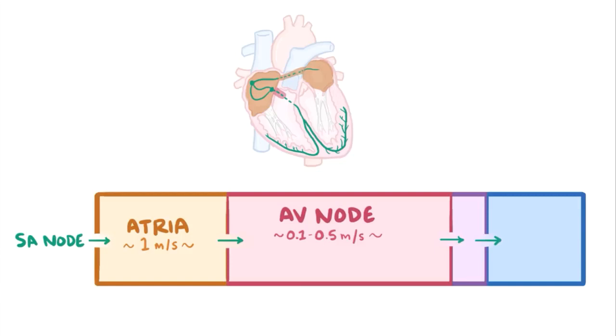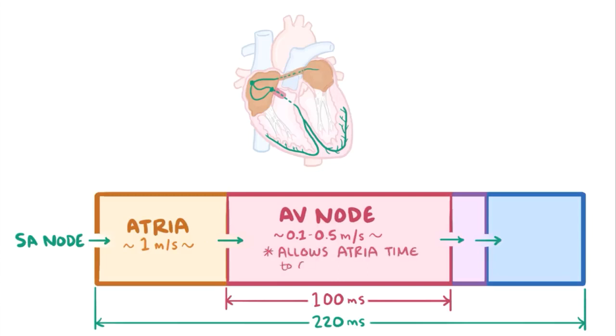Which means that even though this is a super short segment, it takes a relatively long time. In fact, out of the 220 ms for the entire journey of the depolarization wave, about 100 ms or almost half the time is spent in the AV node. That dramatic slowdown lets the atria contract and push blood into the ventricles while the ventricles are still relaxed.